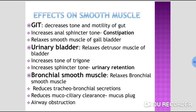Effect of atropine on the urinary bladder: it relaxes the detrusor muscle of the bladder, increases the tone of the trigone, and increases sphincter tone — producing urinary retention.